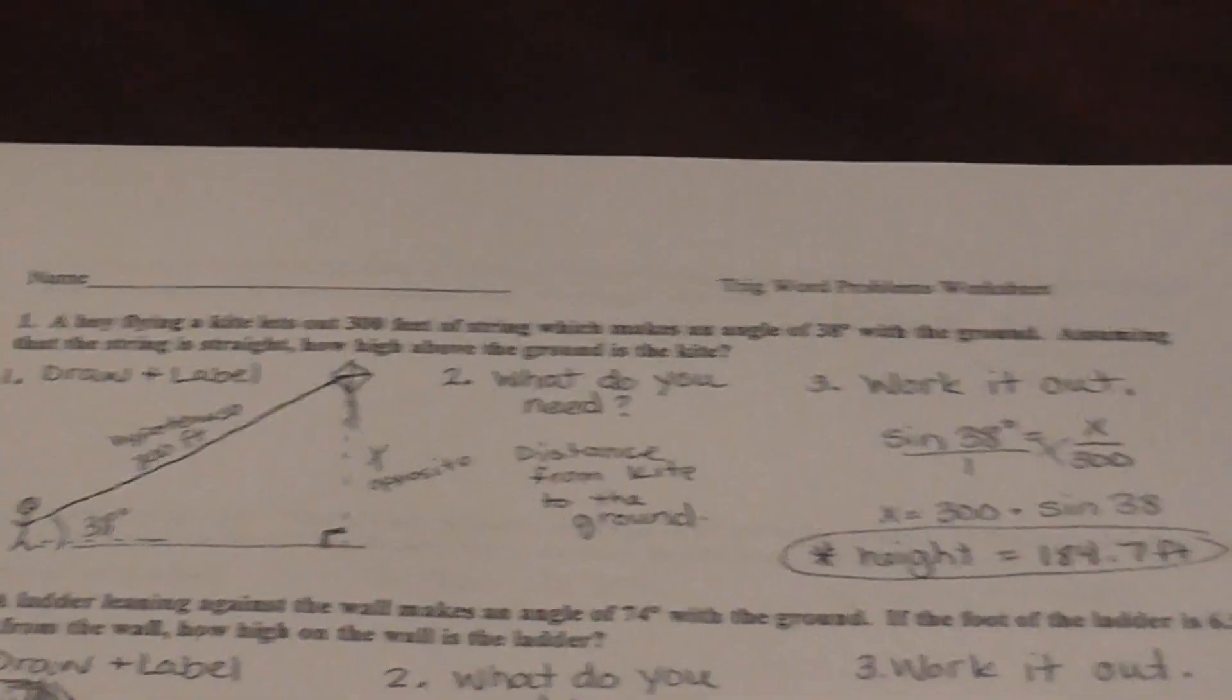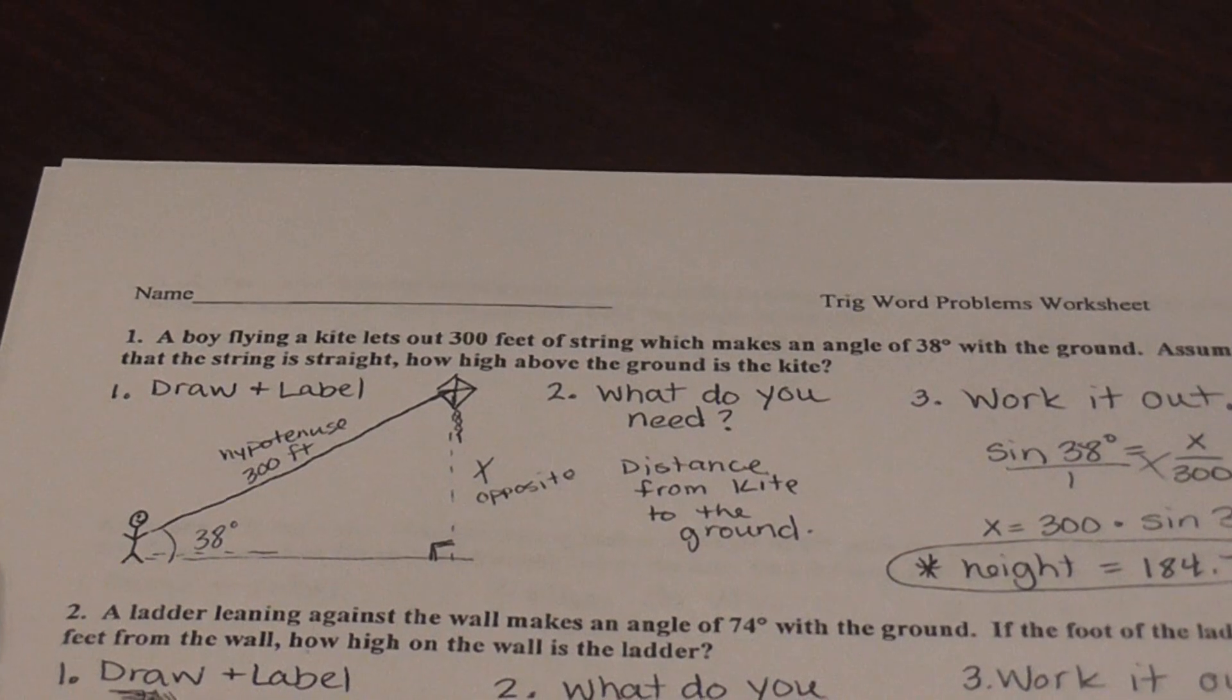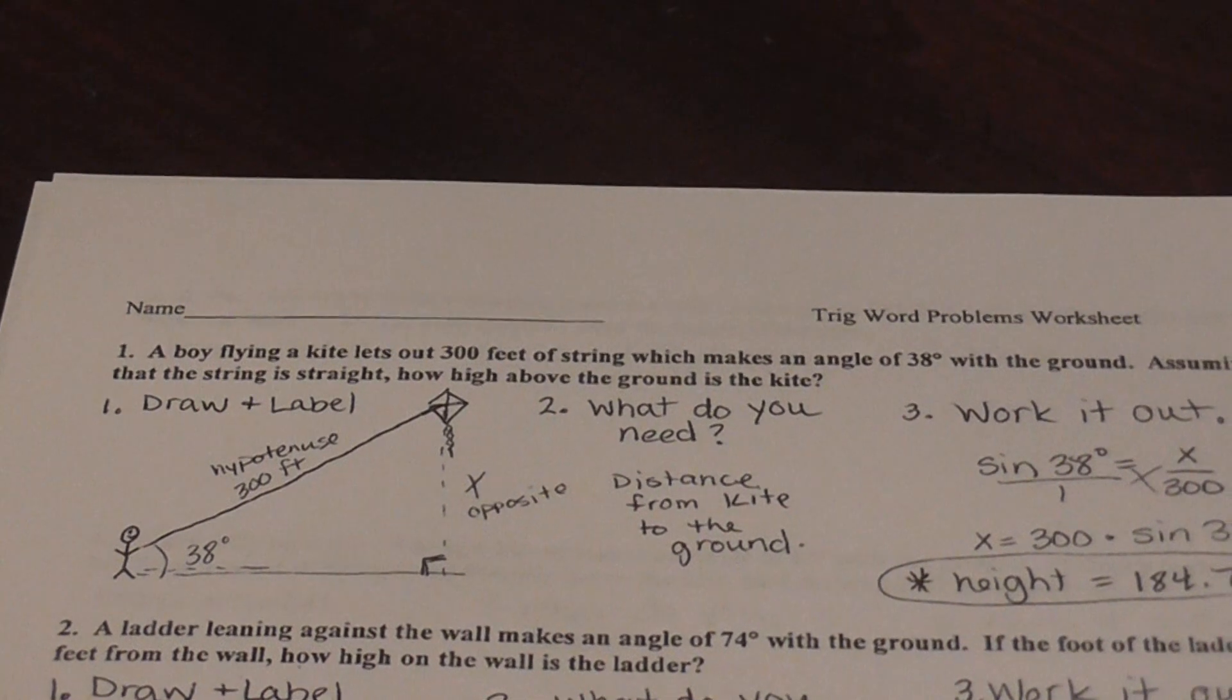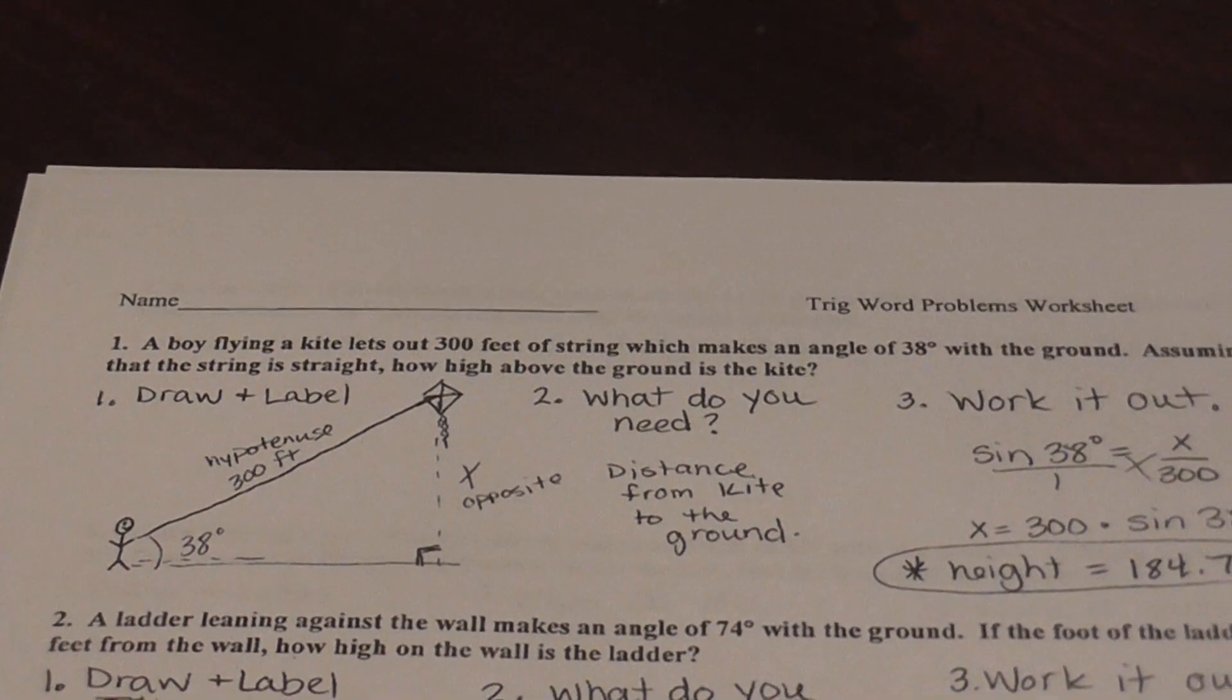So what do these word problems look like? So a boy flying a kite lets out 300 feet of string, which makes an angle of 38 degrees with the ground. Assuming that the string is straight, how high above the ground is the kite?